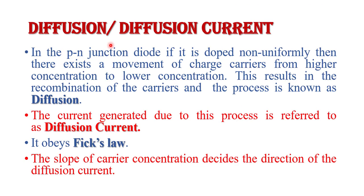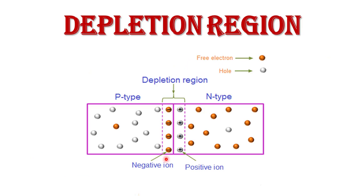What is diffusion current? In a p-n junction diode, if it is doped non-uniformly, there exists a movement of charge carriers from high concentration to low concentration. This results in the recombination of charge carriers, and the process is known as diffusion. The current generated due to this process is referred to as diffusion current. Diffusion obeys Fick's law, and the slope of the charge carrier concentration decides the direction of diffusion current.